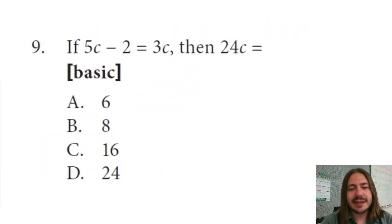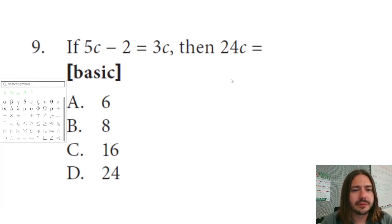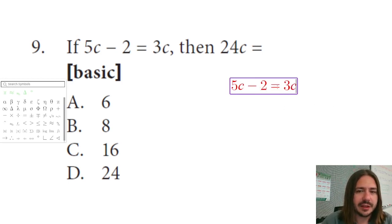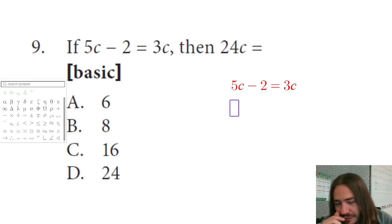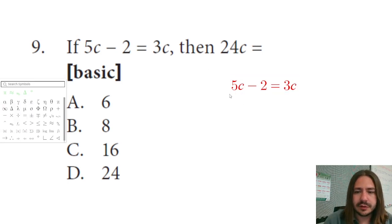Number nine says, if 5C minus 2 equals 3C, then what does 24C equal? All right. Well, if 5C minus 2 equals 3C let's solve this for C and then see what our answer is. Okay. So we're going to subtract 5C from both sides here. So my work here minus 5C on both sides. I'm trying to isolate C.